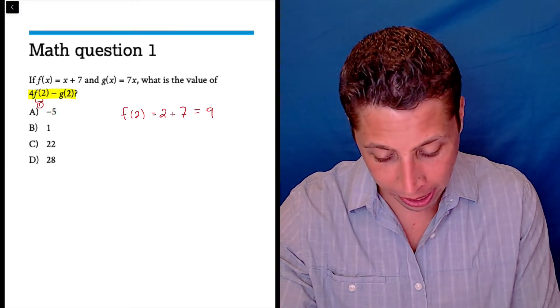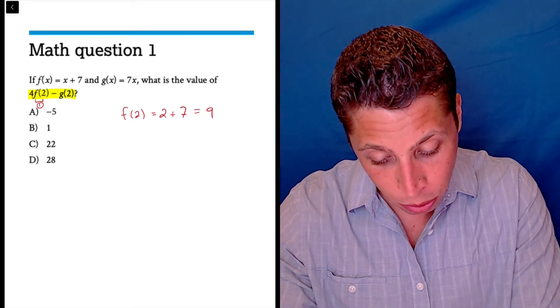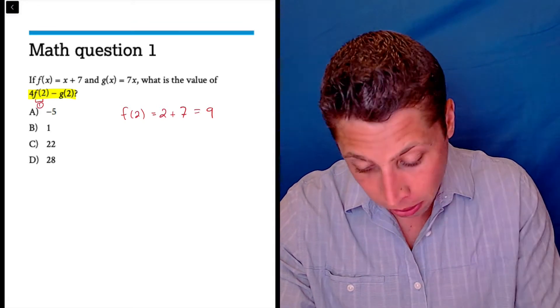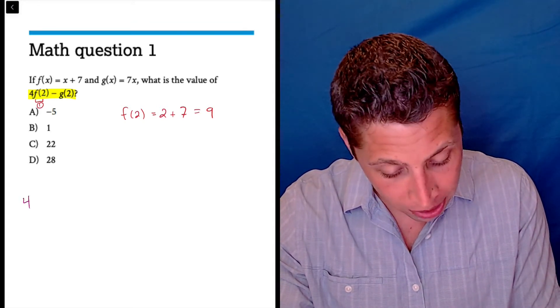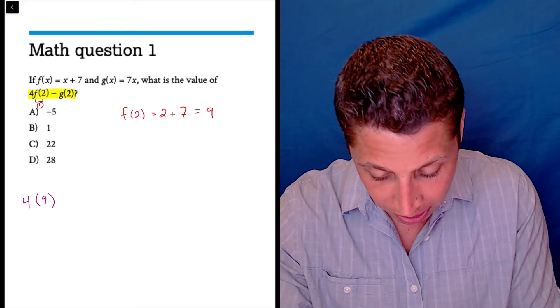So let's start rewriting. I'm going to write that down here. We'll do it in purple. Four times f of two is nine, so we're making a little substitution.